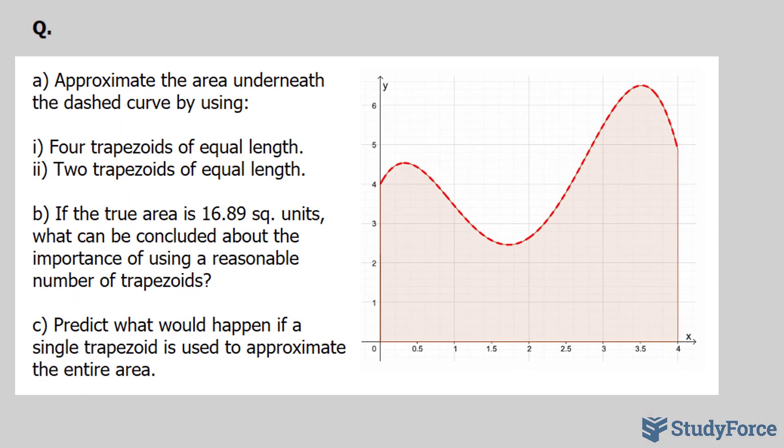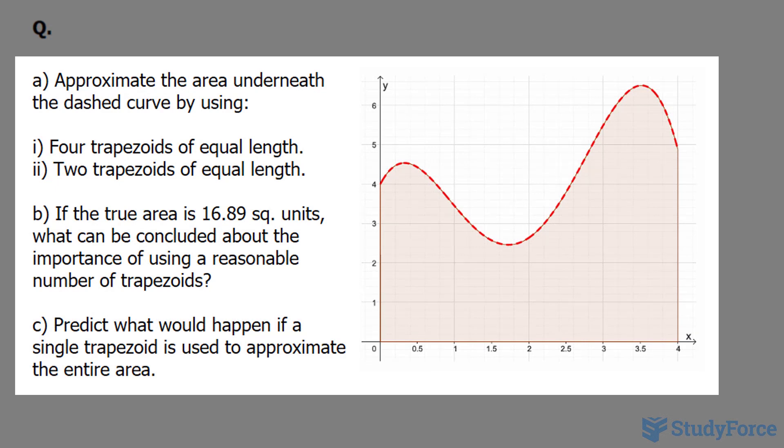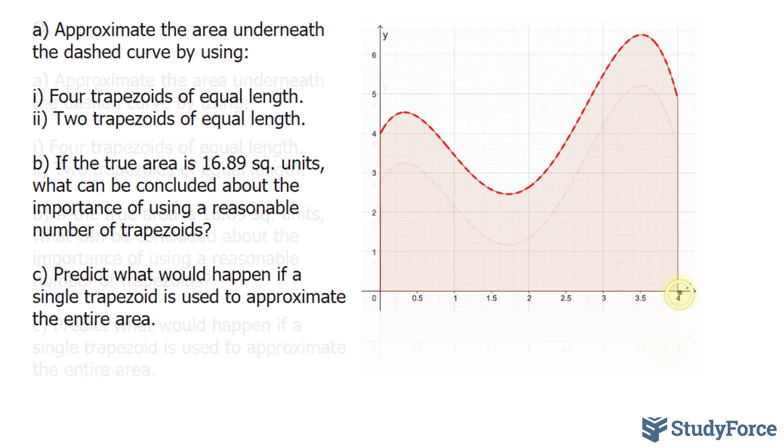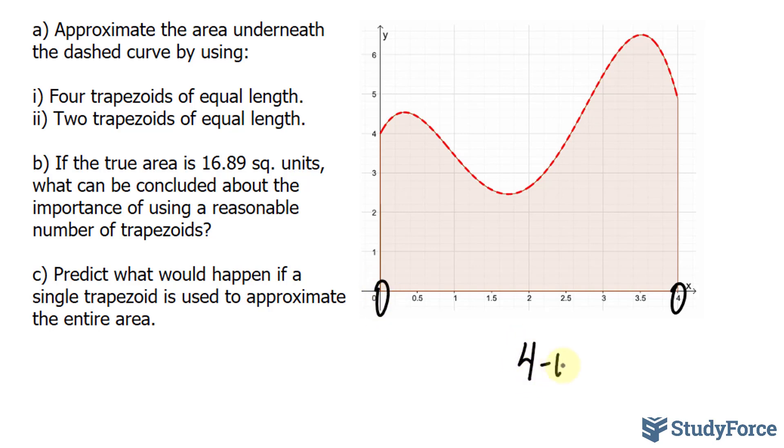So, the question asks: approximate the area underneath the dashed curve by using four trapezoids of equal length and two trapezoids of equal length. And I just want you to think, for a moment, which of these two will produce the more accurate area. So, the very first thing that you must acknowledge is the width of the curve. As you can see, it extends from 0 to 4. So, to find the total width, we can take the last number and subtract it from the first number, which happens to be 4.